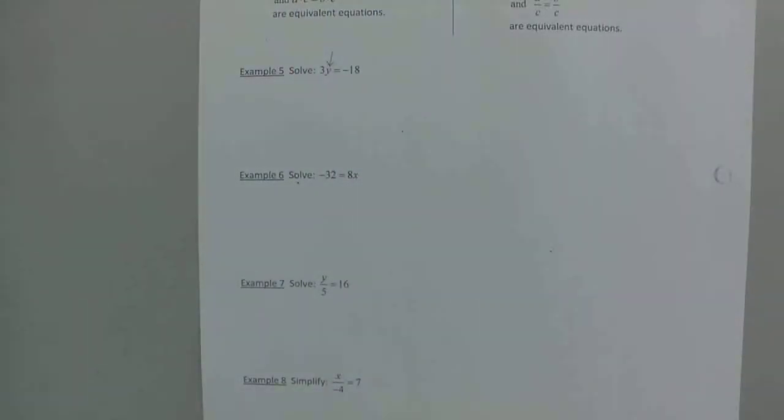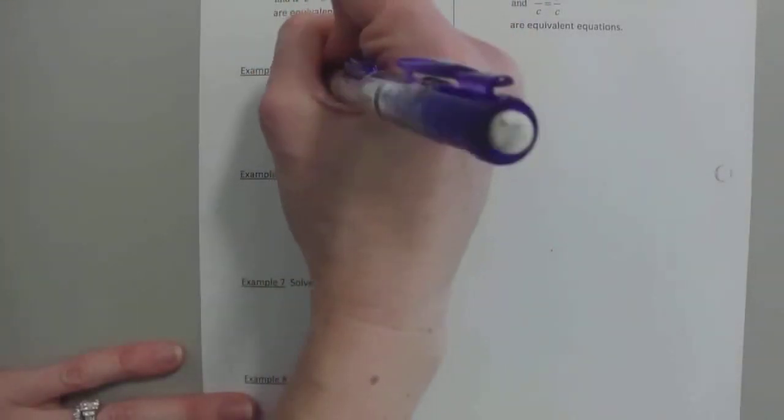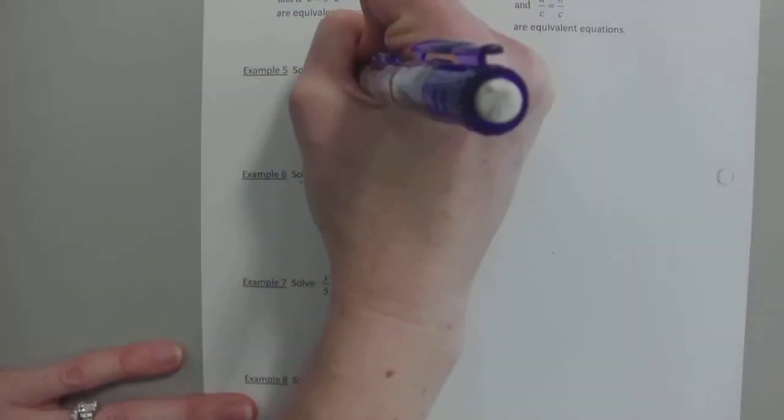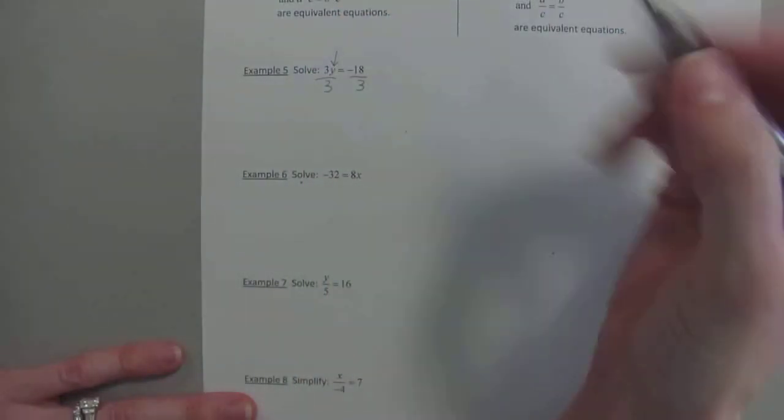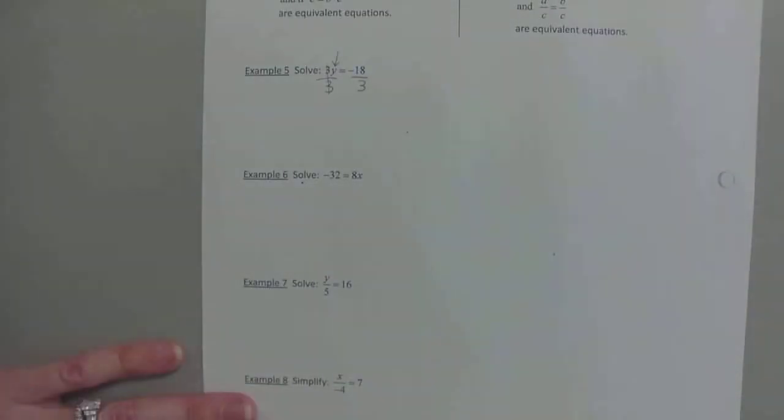So you're just always doing the opposite operation. Let's look at 3y equals negative 18. So we want to know, what, when you multiply it by 3, gets you negative 18? Not 6, but negative 6, yeah. So what we're going to do is, this is multiplication. So to undo multiplication, you divide. If you do it to the left, you do it to the right. What does 3 over 3 reduce to? 1.